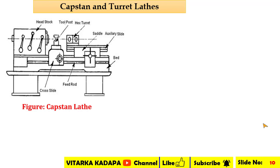This machine is similar in appearance to the center lathe. The only difference is the replacement of the tail stock. The tail stock is totally missing when you compare it with the normal engine lathe. Instead of the tail stock, we have a hexagonal turret on the top surface of the auxiliary slide, with a saddle attachment. That is the difference from the normal center lathe to the capstan lathe and turret lathe.